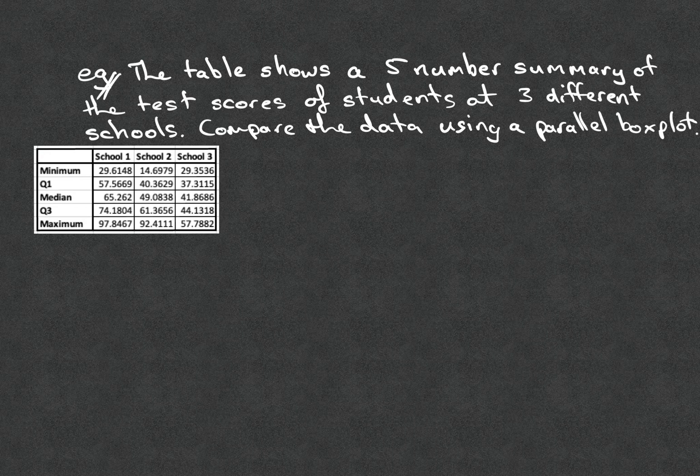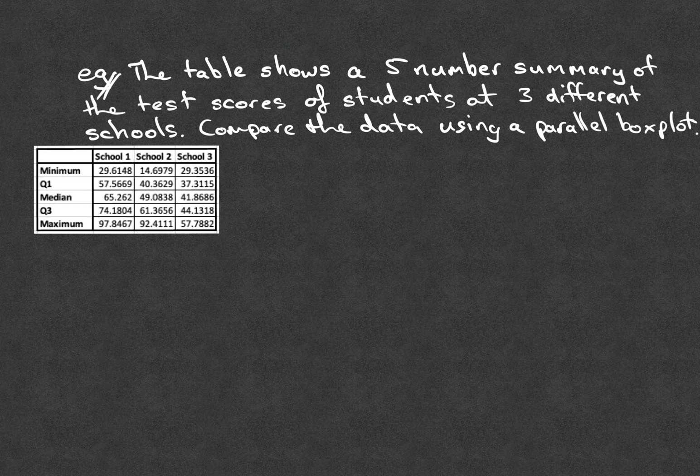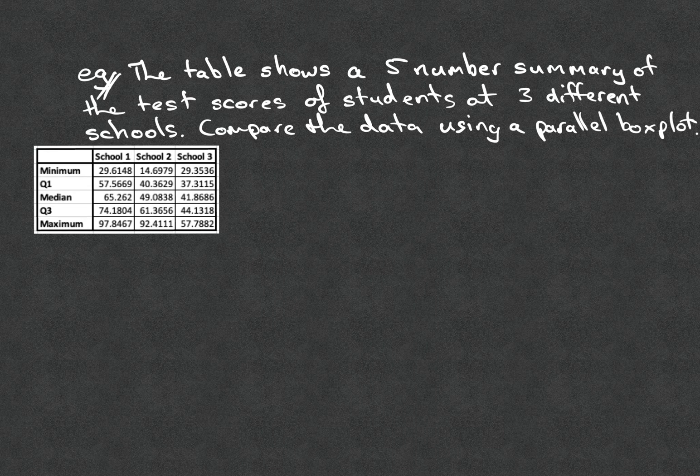So essentially what we're going to do is just create three different box plots, one for each school. But we'll put the box plots on top of each other so that we can compare the different spreads of data across the three schools.